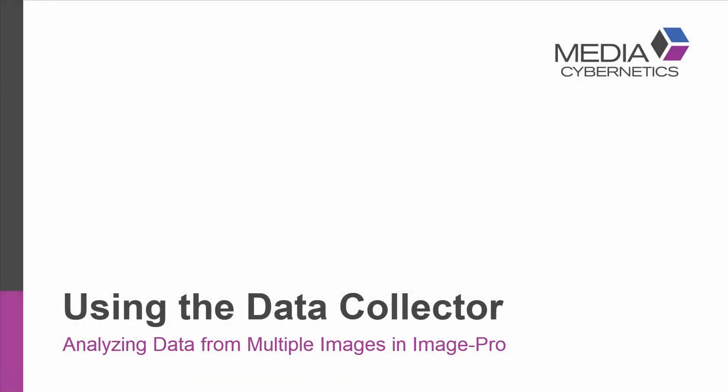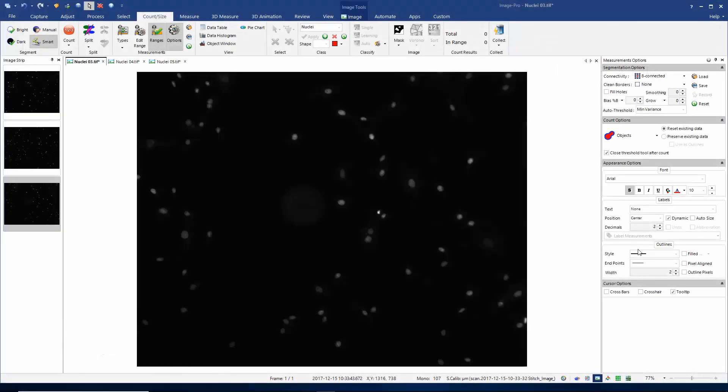Hello, today we'll be discussing how to use the data collector in ImagePro. The data collector allows you to collect data from multiple images into a single table, and it gives you the option of collecting raw data, statistical data, or both raw and statistical data. This video assumes that you already know how to use the count size feature of the software. If you're not familiar with this, I suggest you go and watch our count size video for some background information.